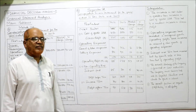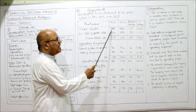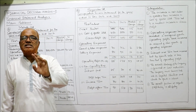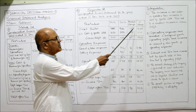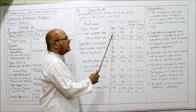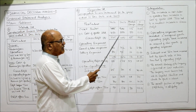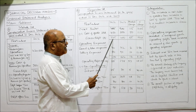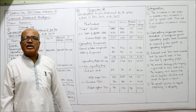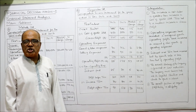Now for the changes: absolute change = current year minus last year, so net sales: 900 minus 785 = 115; percentage change = 115 divided by 785 into 100 = 14.65%. Cost of goods sold: 500 minus 450 = 50; 50 divided by 450 into 100 = 11.11%. Gross profit: 400 minus 335 = 65; 65 divided by 335 into 100 = 19.40%. Calculate all rows similarly.